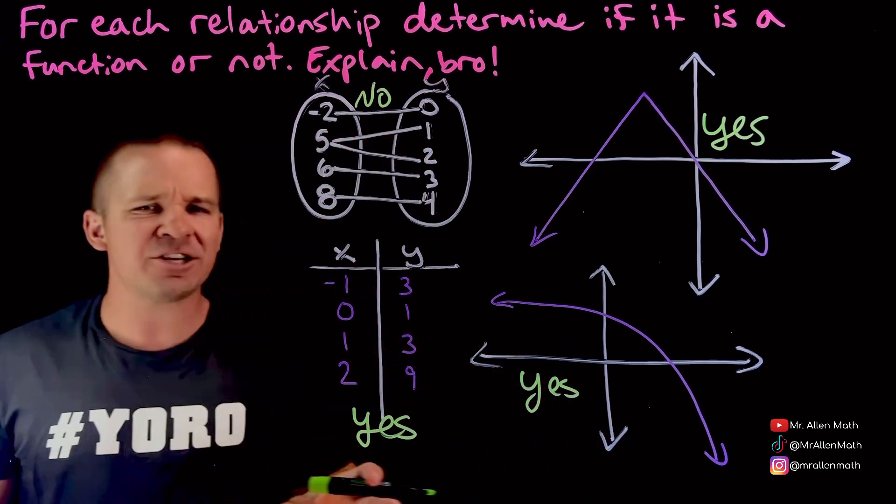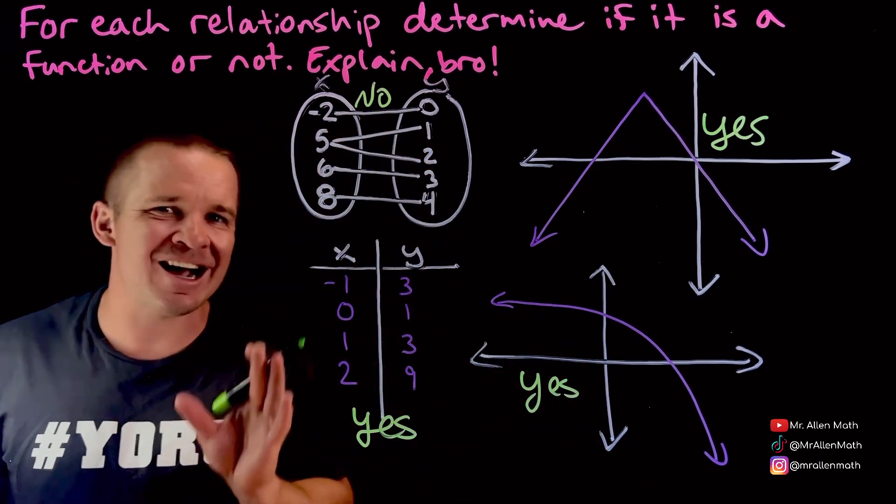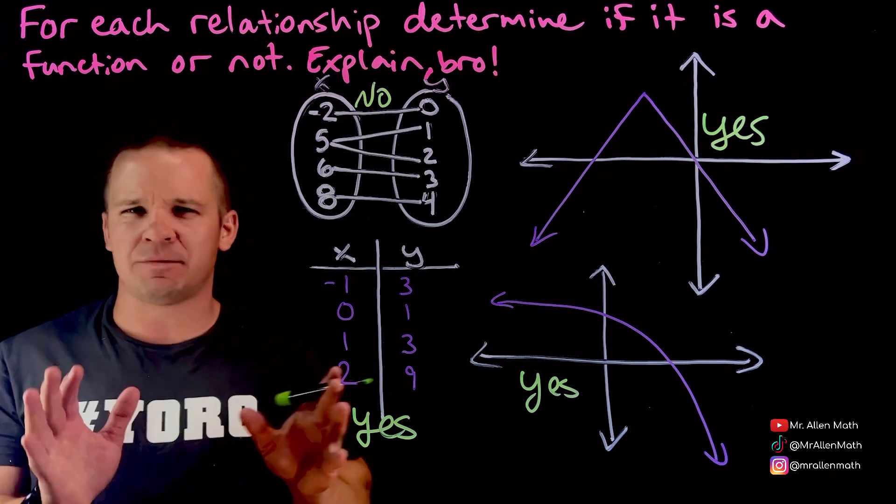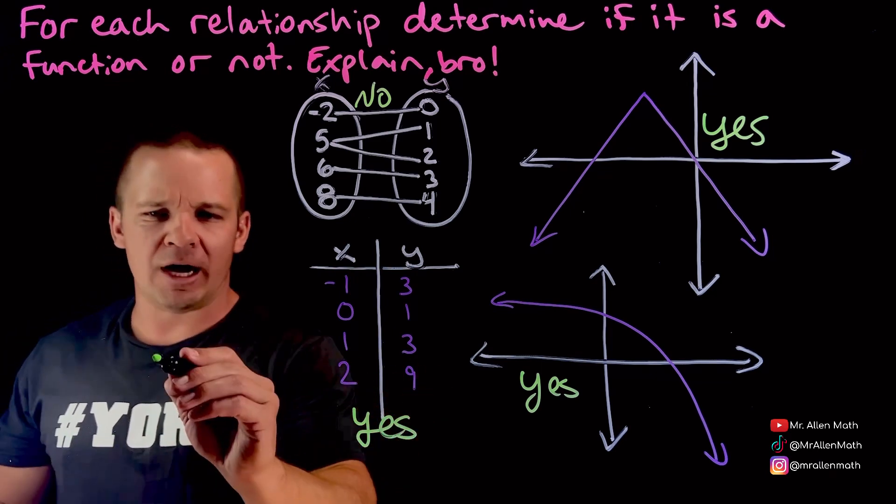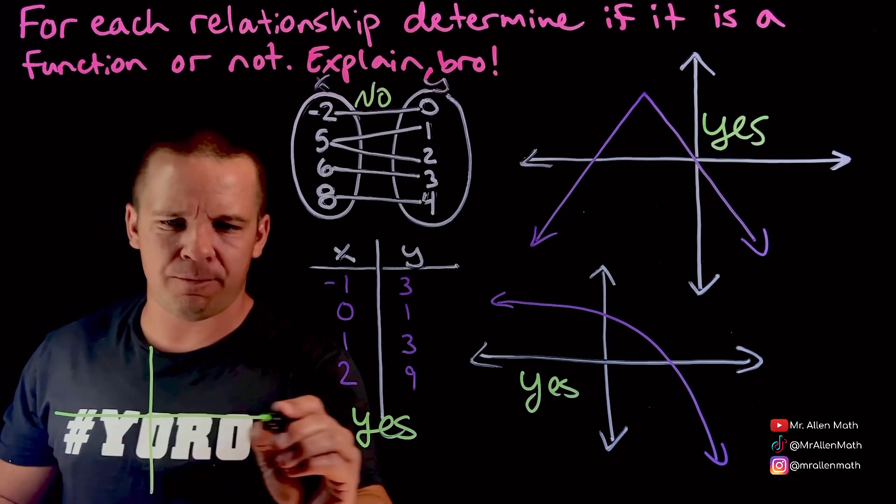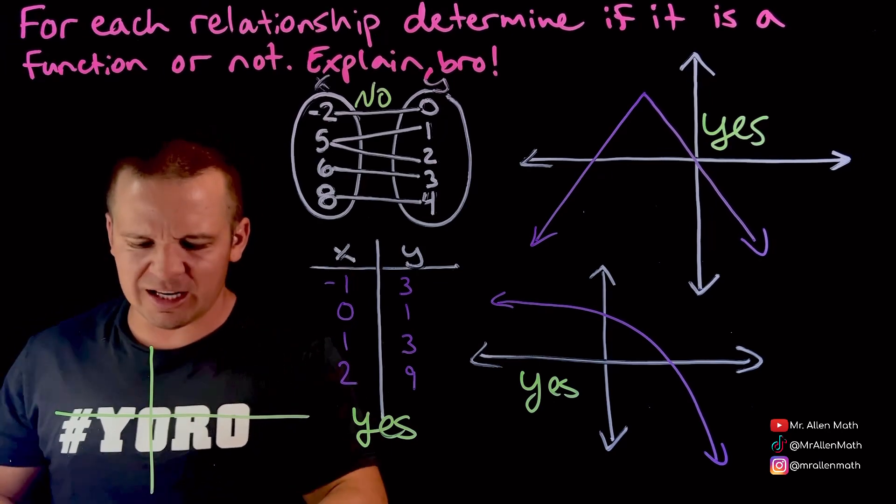Let's actually take a look at a graph here that's not going to be a function. I'm going to give you an example of that. All right, so I'm going to go ahead and do a little graph here. I'll get a different color. I'll go with the blue here.